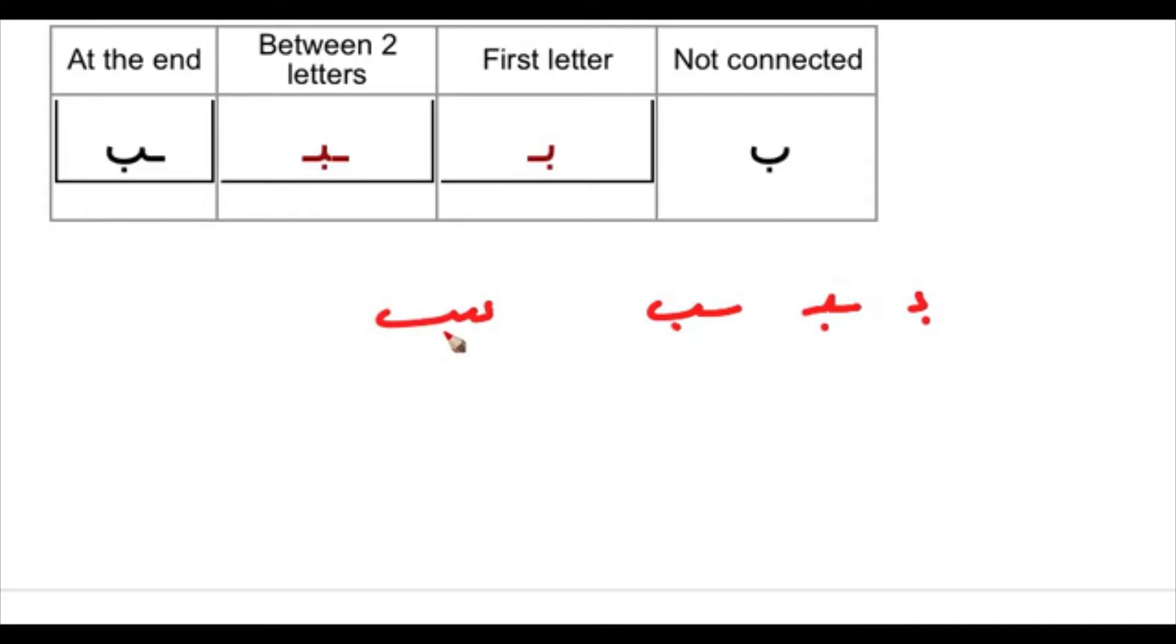BA, YA with two dots, and TA with two dots. This is BA in the beginning. You see the distance between them is not really long as it shows here, but this is just to show you how the connection works. So bait means house. This is the first letter BA. Let us make the letter...